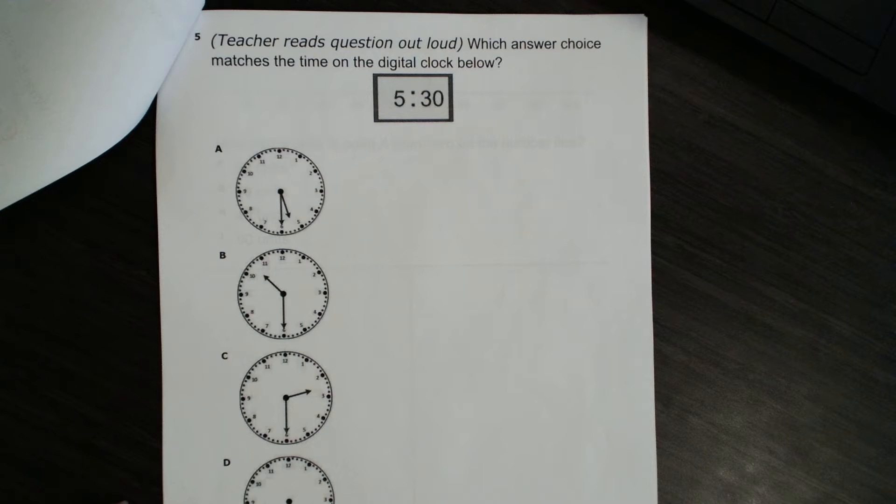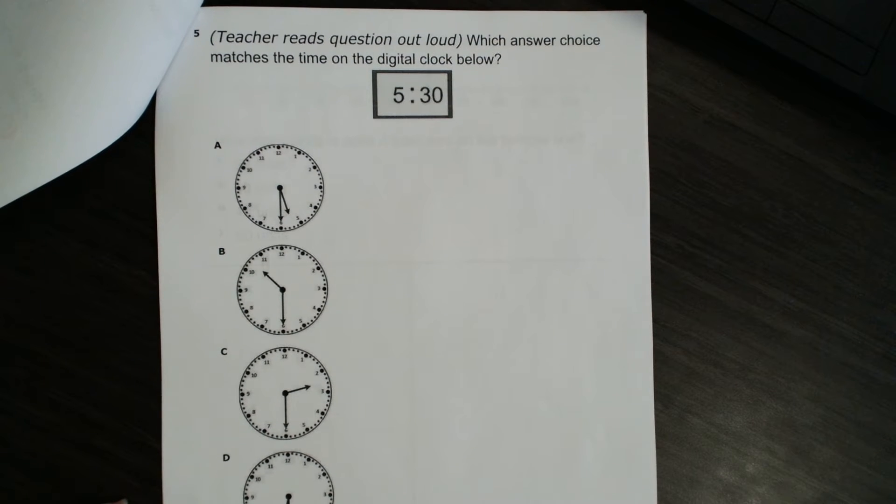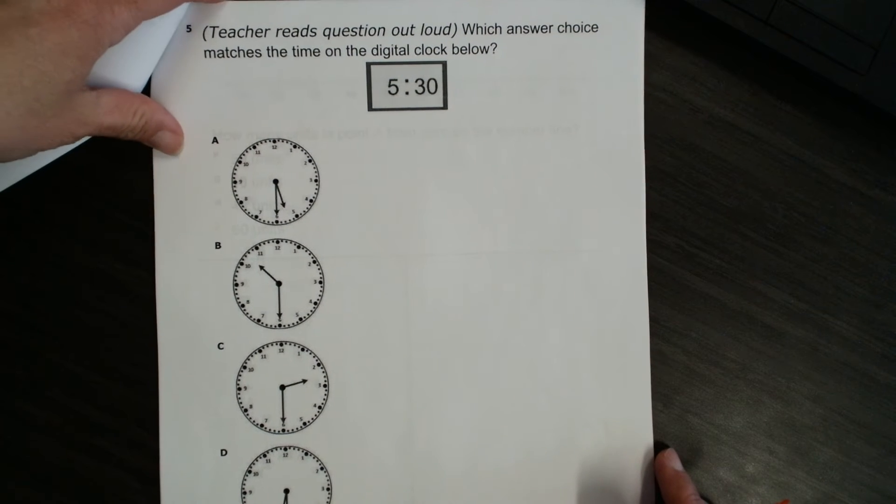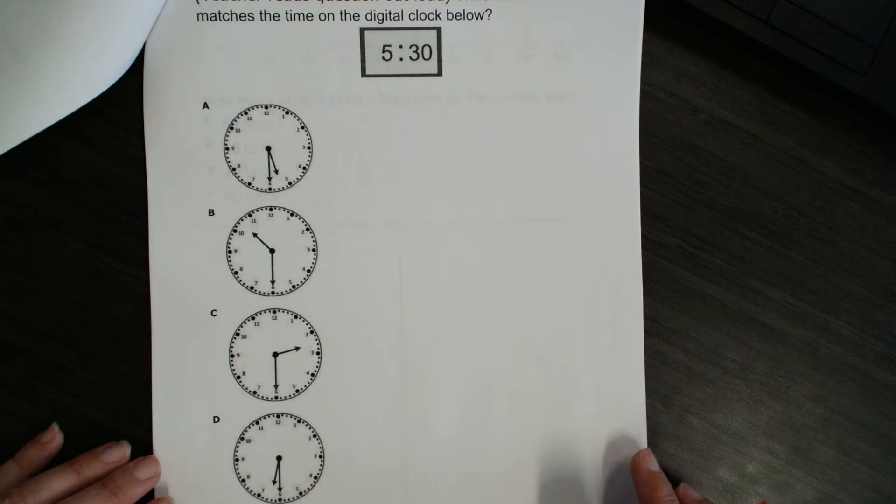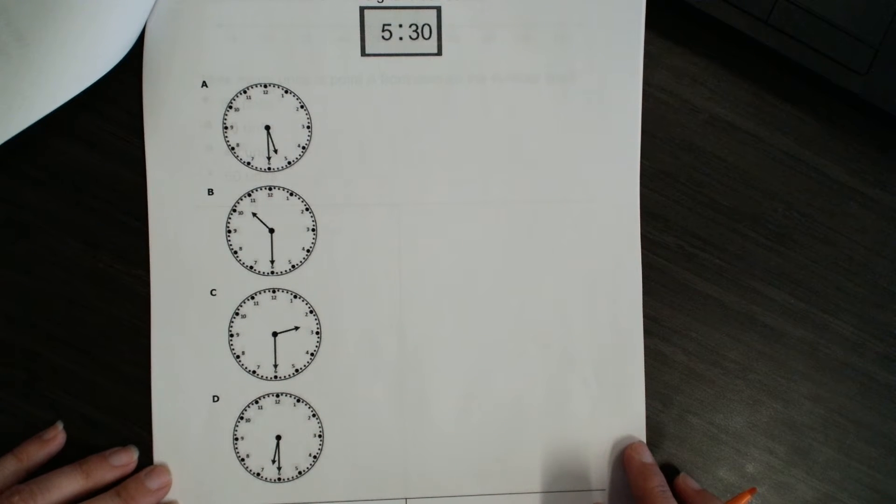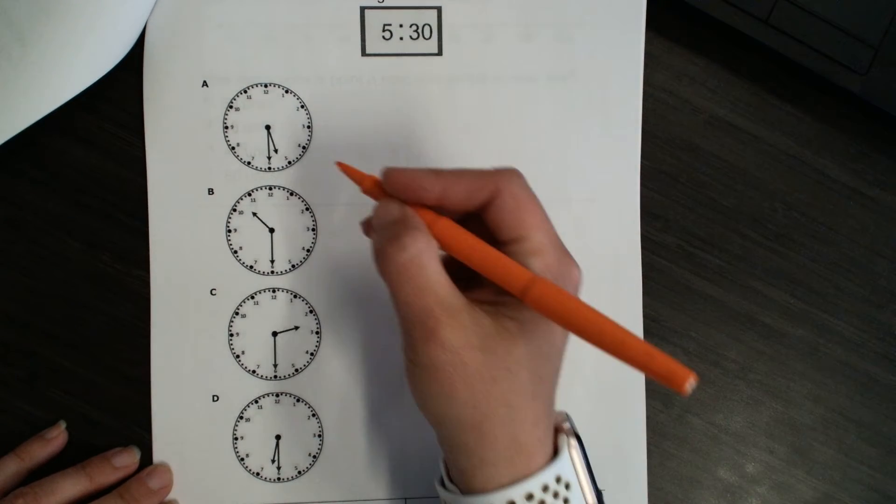Number five. Which answer choice matches the time on the digital clock below? So, our digital clock says 5:30. So, we're looking for a clock that shows 5:30. Let's check A.